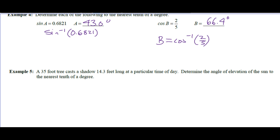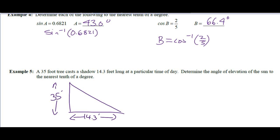A 35-foot tree casts a shadow 14.3 feet long. Let's draw a diagram — here is the tree, casting a shadow 14.3 feet long. Trees are perpendicular to the ground, rising straight up. We want to determine the angle of elevation to the sun. Angle of elevation is from the horizontal looking up. In relation to the angle, we have the side opposite and the side adjacent — that's the tan ratio, so tan theta is opposite over adjacent.